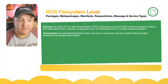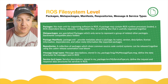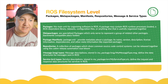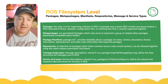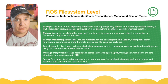The file system level covers packages, meta packages, manifests, repositories, messages, and service types. A package is the unit for organizing software in ROS - it contains ROS runtime processes or nodes, dependent libraries, data sets, configuration files, and anything else needed. A meta package is a specialized package that represents a group of related packages, with some backwards compatibility with ROS version 1. ROS has gone through quite a few iterations - there's the original ROS and what we now use as ROS 2.